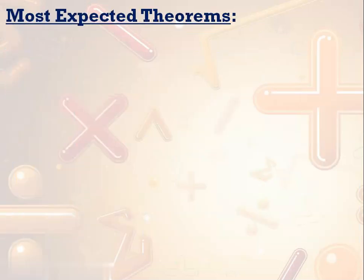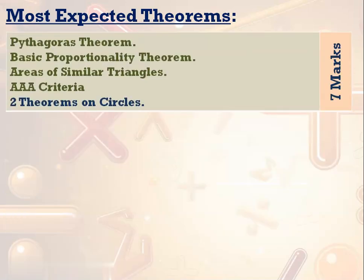What are all the theorems we can expect for the examination? We have to answer 2 theorems in an examination — one from triangles and one from circles. The 4 important theorems from triangles are: Pythagoras theorem, basic proportionality theorem, areas of similar triangles, and angle-angle criteria. Among these 4, we can expect a single question for minimum 4 marks or sometimes 5 marks.